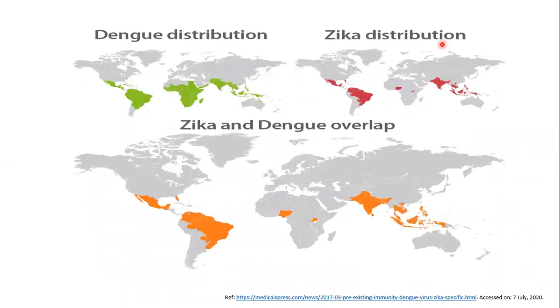The main motivation of our study was to design a vaccine which can target or which can be used to prevent the infections of both Dengue and Zika viruses simultaneously from those regions where these two diseases, Dengue fever and Zika fever, occur at the same time.